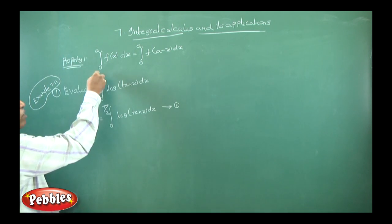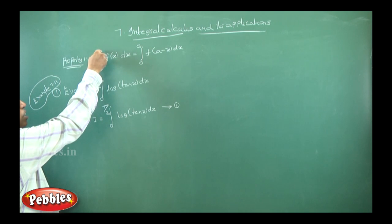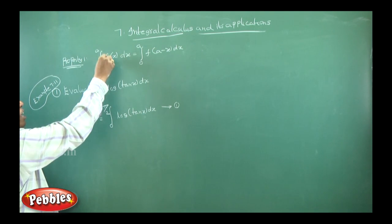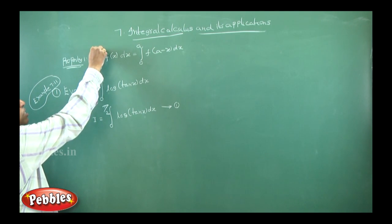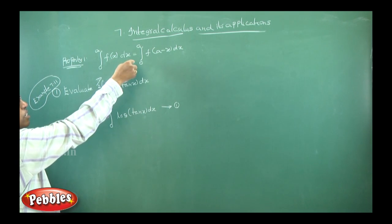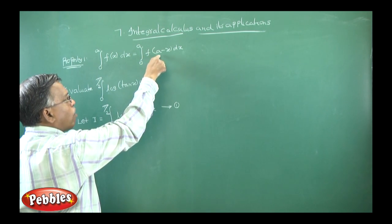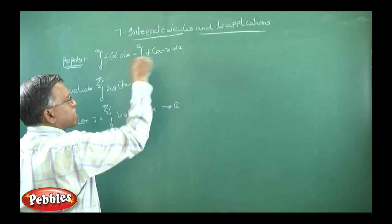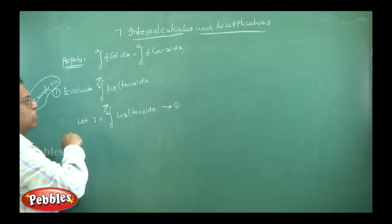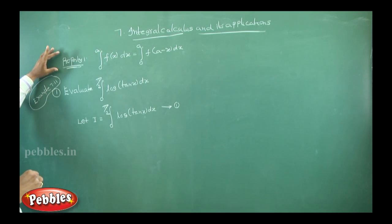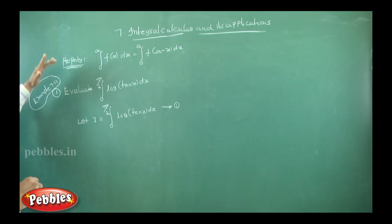This is Property 1 of the definite integral: the integral from 0 to a of f(x) dx is equal to the integral from 0 to a of f(a minus x) dx. By using this property, we will solve some problems.